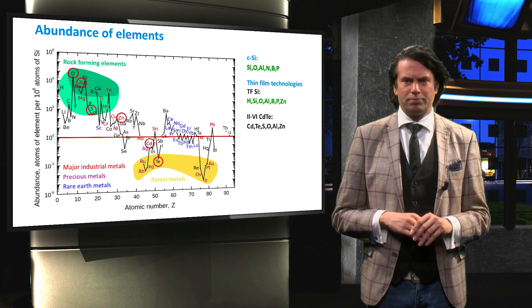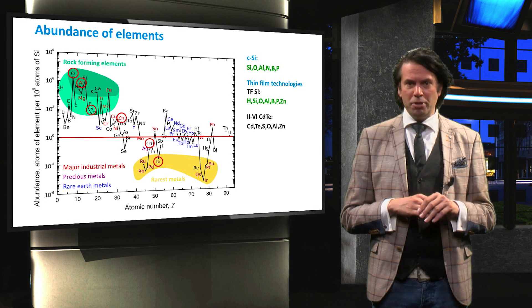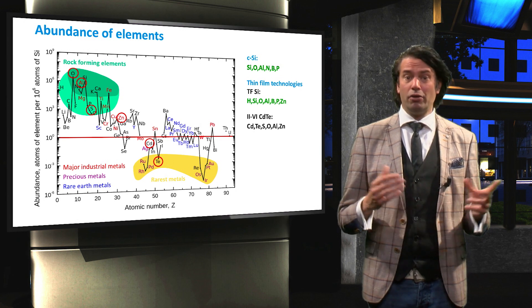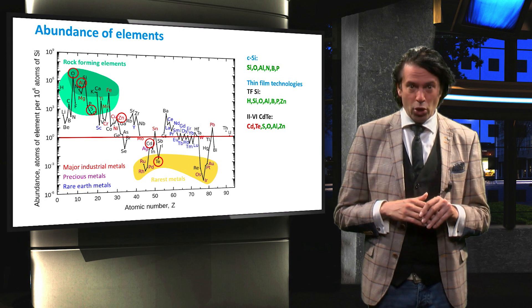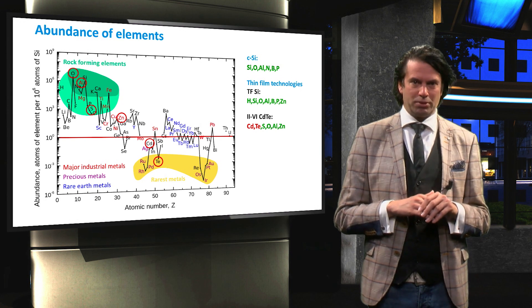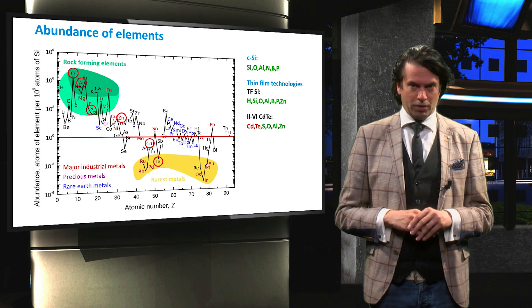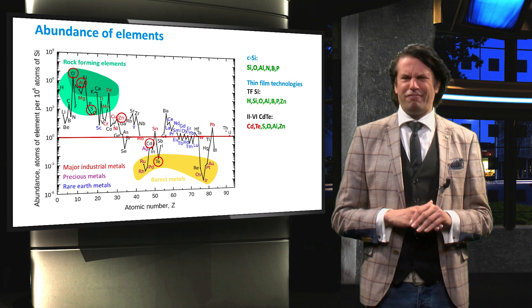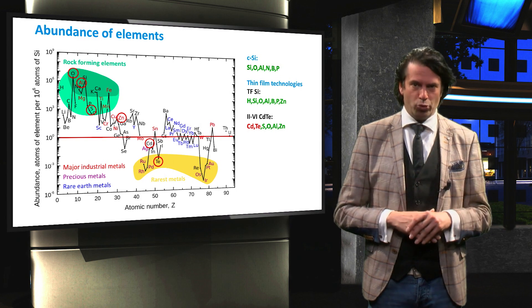Next is cadmium telluride. While the supporting materials like sulfur, aluminium and zinc are abundant, cadmium and telluride are not. Telluride is among the rarest stable solid elements, with an abundance of about 1 atom per billion silicon atoms. This is comparable to the abundance of platinum. Furthermore, elementary cadmium is toxic, and it is very important to prevent cadmium entering into our ecosystem.